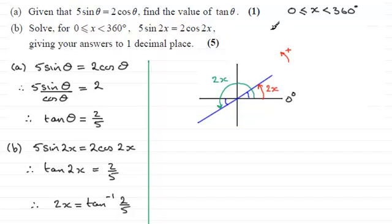Doubling 0 gives 0. Doubling 360° gives 720°. So 2x ranges from 0 to 720°. This means we can add 360° to our first two values to get additional solutions. We inverse tan of 2/5...